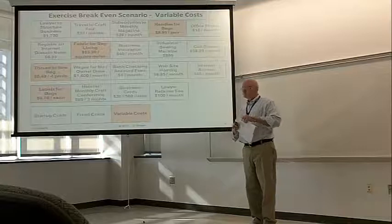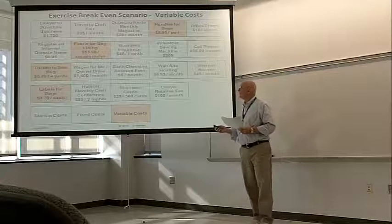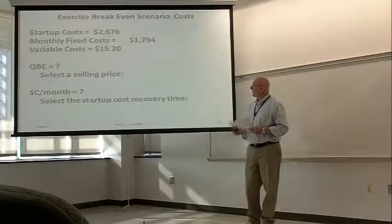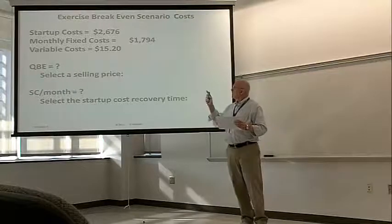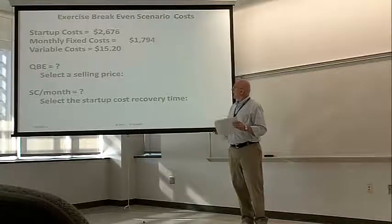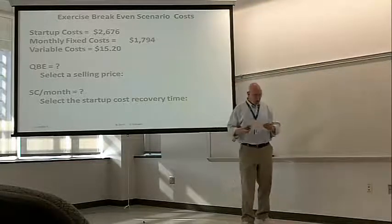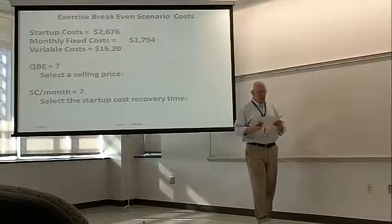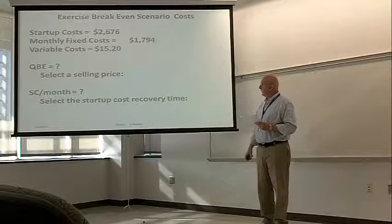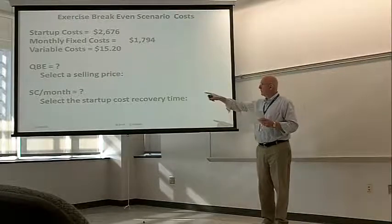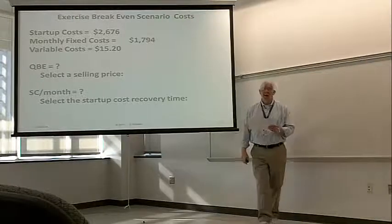You are certainly welcome to do the calculations. But, for your convenience, the start-up costs are $2,676. Monthly fixed are $1,794. And the variable costs are $15.20. So, how do we calculate the break-even quantity? And how do we calculate the start-up cost per month allocation?